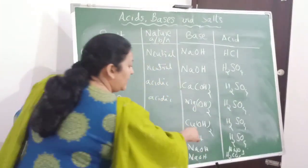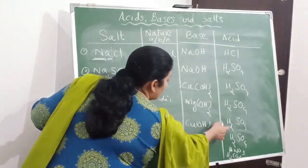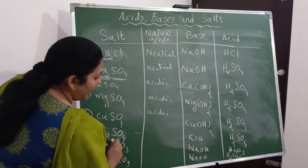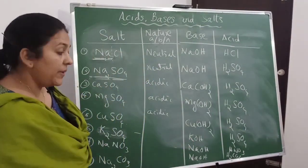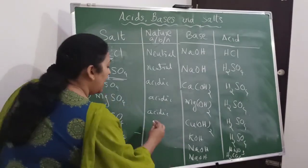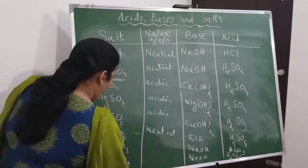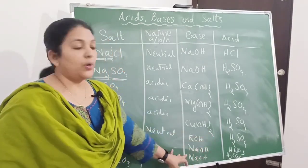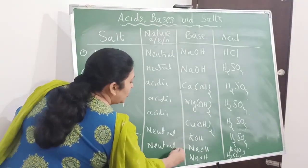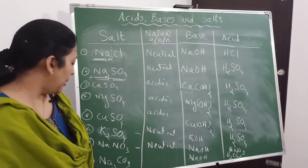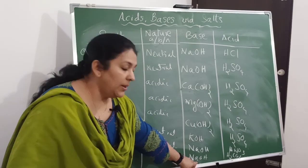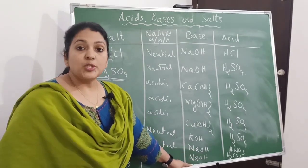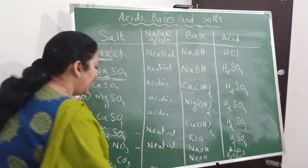Copper sulfate: weak base and strong acid, so acidic. Potassium sulfate: potassium hydroxide is a very strong base and sulfuric acid is also a strong acid, therefore it will be neutral. Sodium nitrate: sodium hydroxide is strong and nitric acid is also strong, therefore sodium nitrate is also neutral. Sodium carbonate is formed from a strong base but a weak acid — carbonic acid is weak — therefore the nature of the salt will be basic.